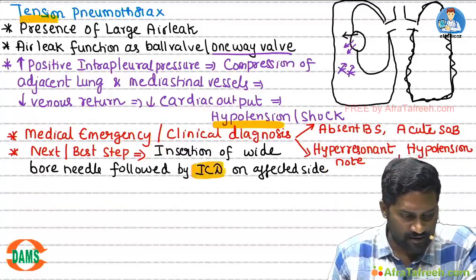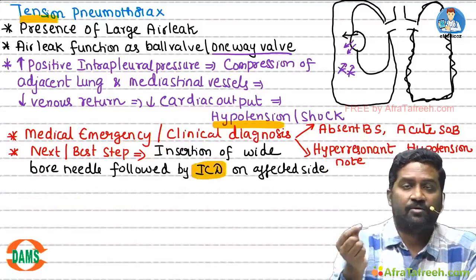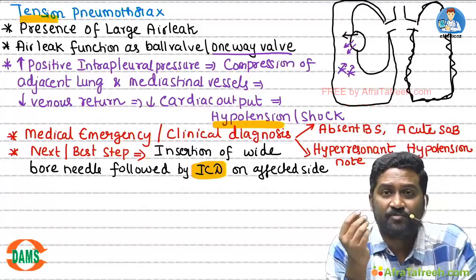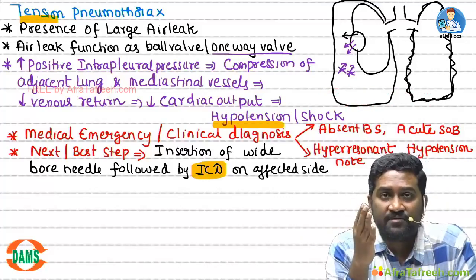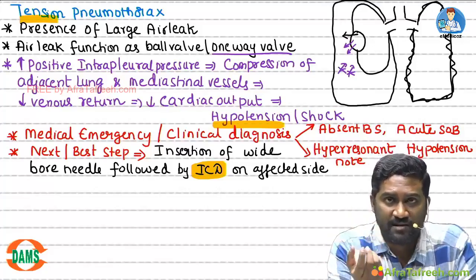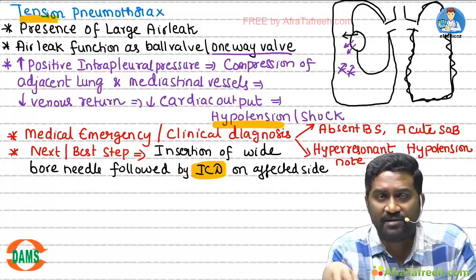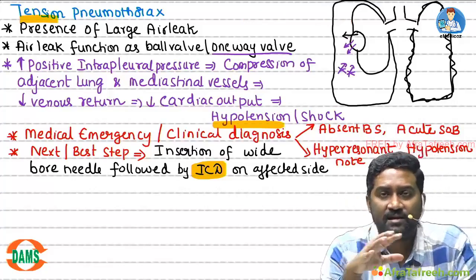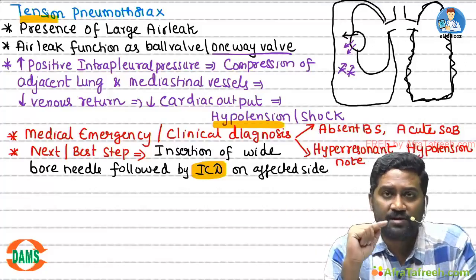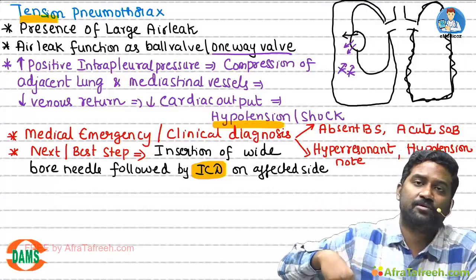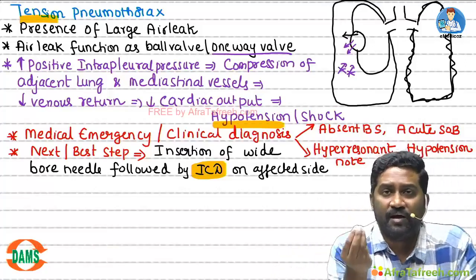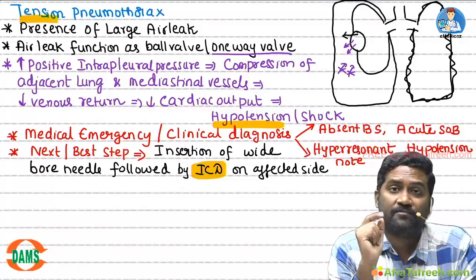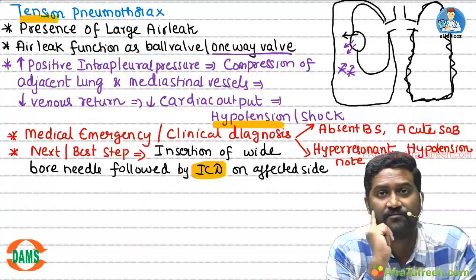The best next step is to insert a wide-bore needle followed by intercostal drain on the affected side. There is excess pressure compressing the vessels — by inserting a needle you relieve the pressure, compression is relieved, circulation improves, and the patient's life is saved. Why not go for ICD first? Because intercostal drain insertion is a minor surgical procedure taking a few minutes, during which the patient may not survive. A needle takes only seconds. ICD is inserted later for better drainage.